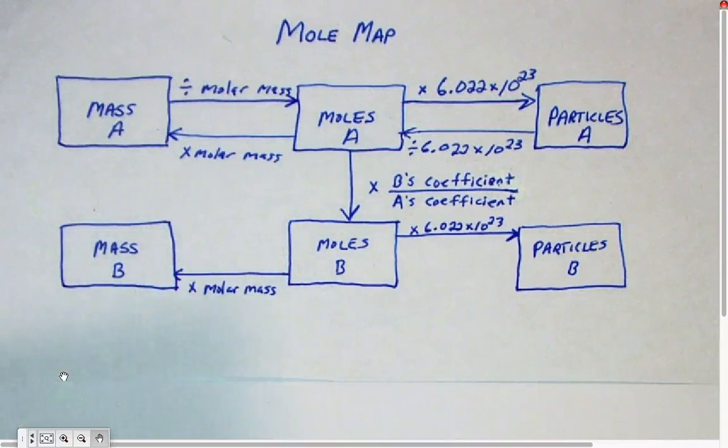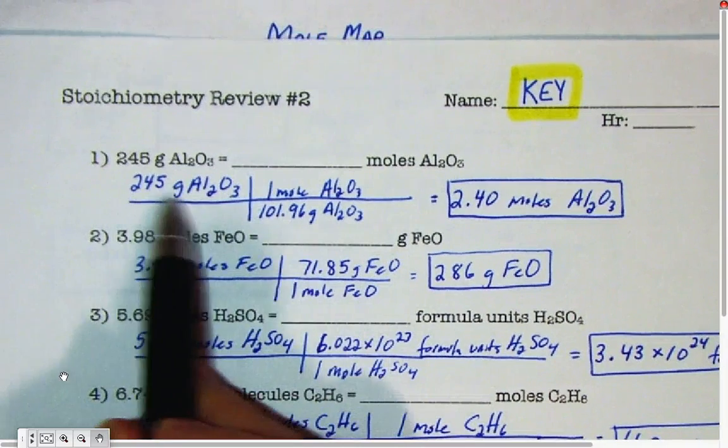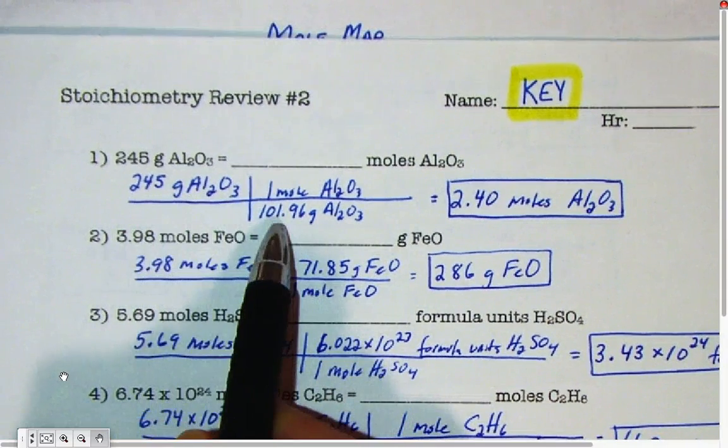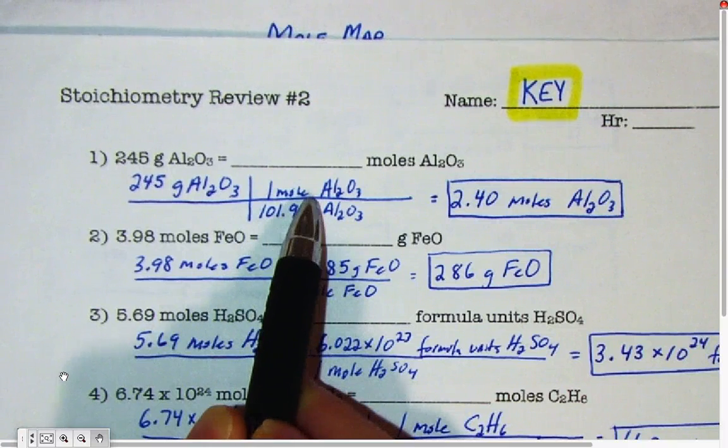I have an example from the stoichiometry review number 2. We knew the mass of a chemical, we divided by its molar mass, remember our t-chart, the numbers in the bottom that you're supposed to divide by, and that's how you figure out the number of moles.